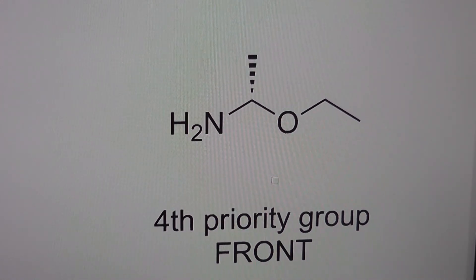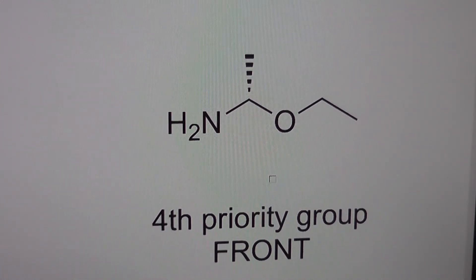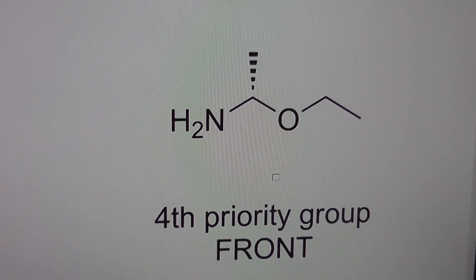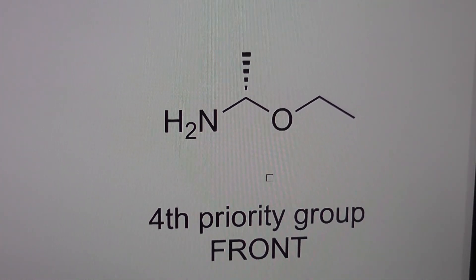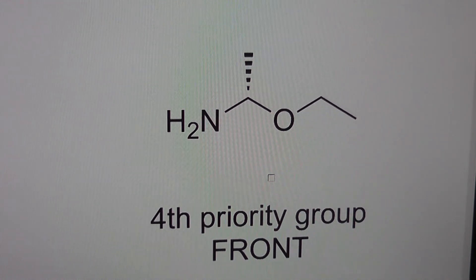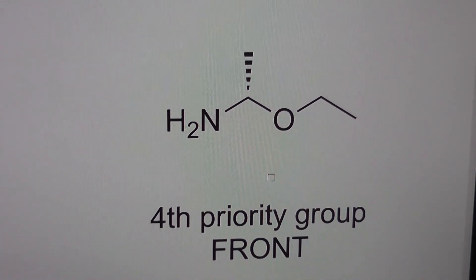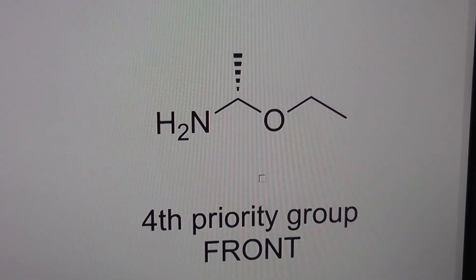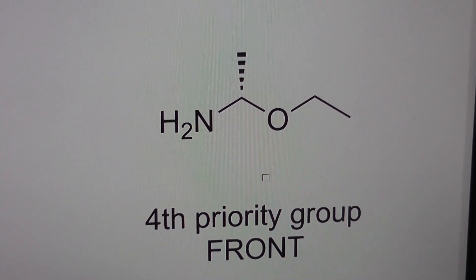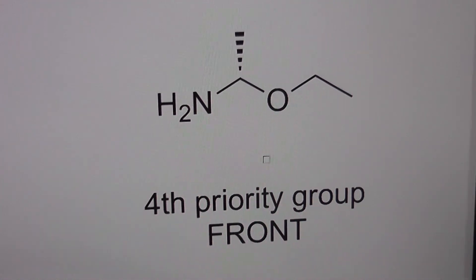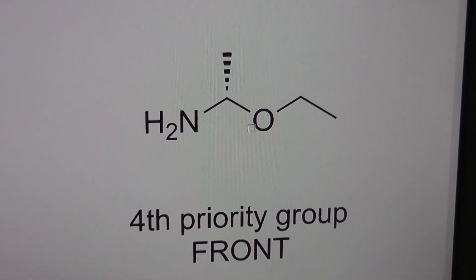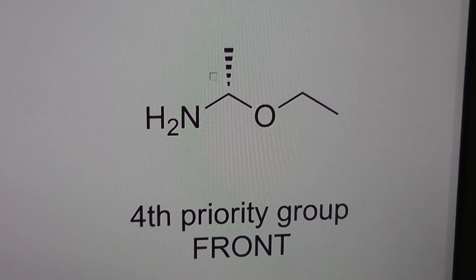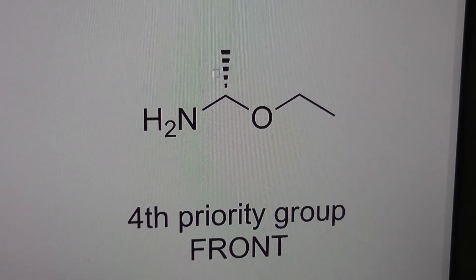Another way of looking at it is to follow the rule that any two substituents can be swapped. When those are swapped, the configuration will change to the opposite. So if it's already S, if we swap two substituents, then the configuration will be R. We can use that to our advantage. We'll swap the fourth priority group with the third priority group, so the methyl group will now be at the front and the H will be at the back.